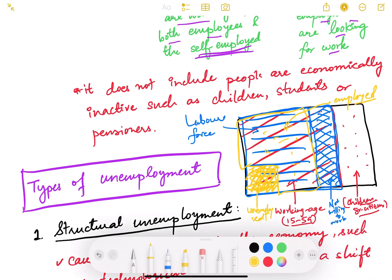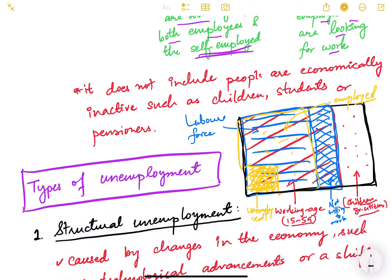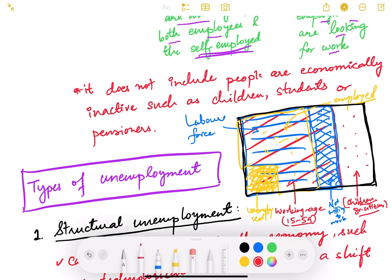To recap: the outer rectangle is the total population. The red part is the working age population, ages 15 to 59 — the leftover being children and senior citizens. Within the working age population, those not willing to work are excluded. The remaining people willing to work form the labor force. From the labor force, the yellow portion are unemployed — ready to work but not finding a job — and the rest are employed.